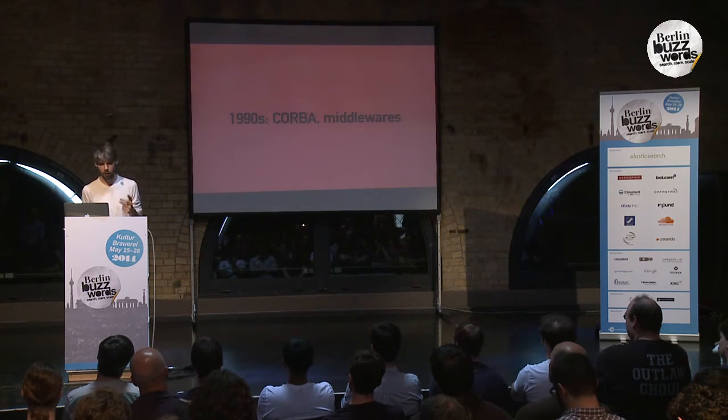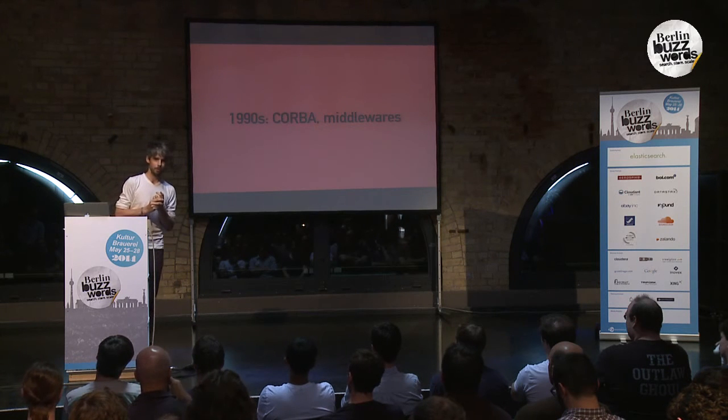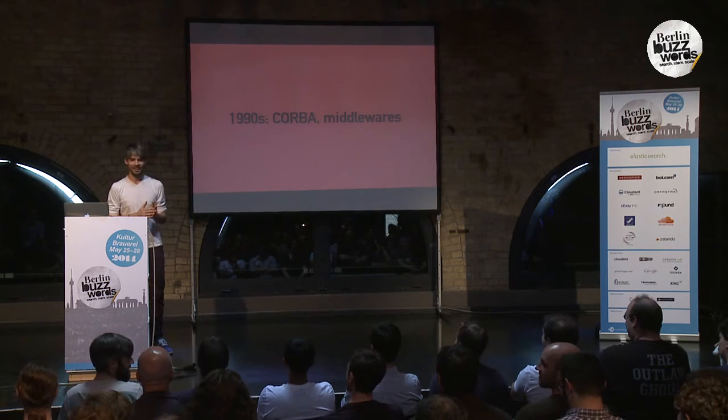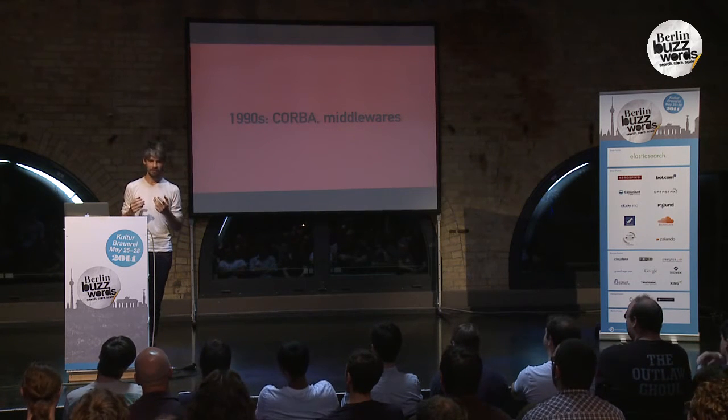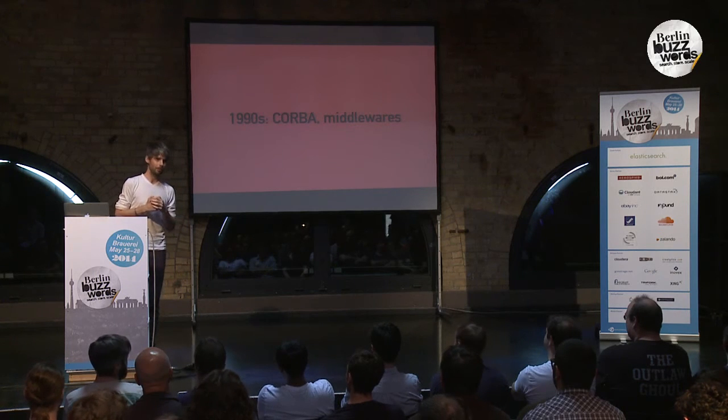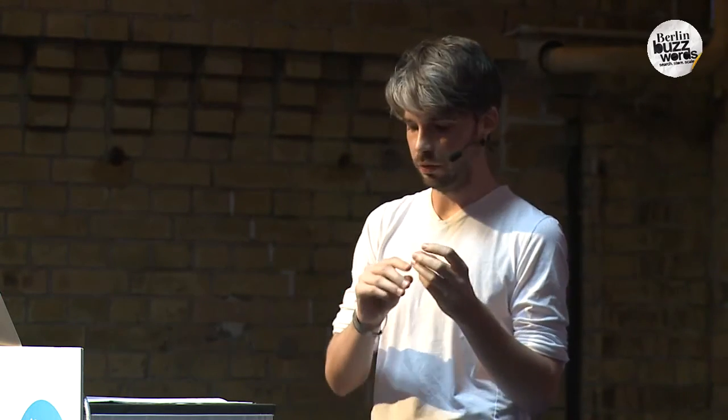The next leap forward was in the 90s with CORBA and similar middlewares. Has anybody used CORBA? I'm so sorry — CORBA was really bad. They tried things like the distributed object paradigm and location transparency, where it shouldn't matter if data was on your local machine or on the other end of a network connection. I'd argue these middlewares went too far too fast: they treated the network as more reliable than it actually was and didn't provide good abstractions for dealing with the errors networks inevitably give you.